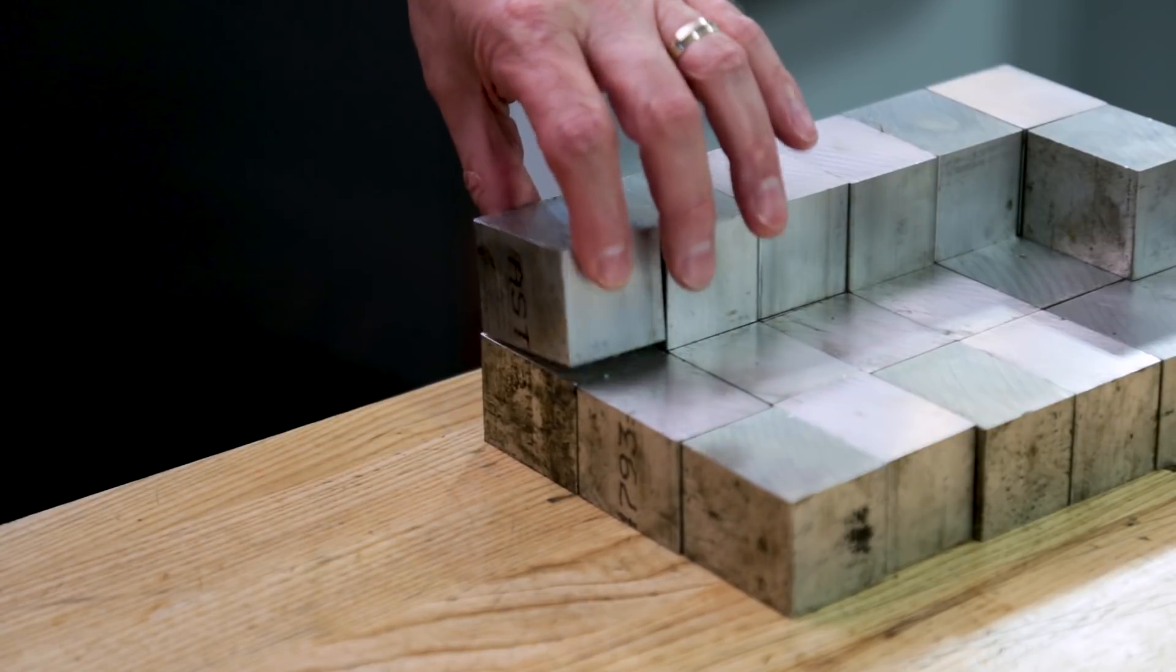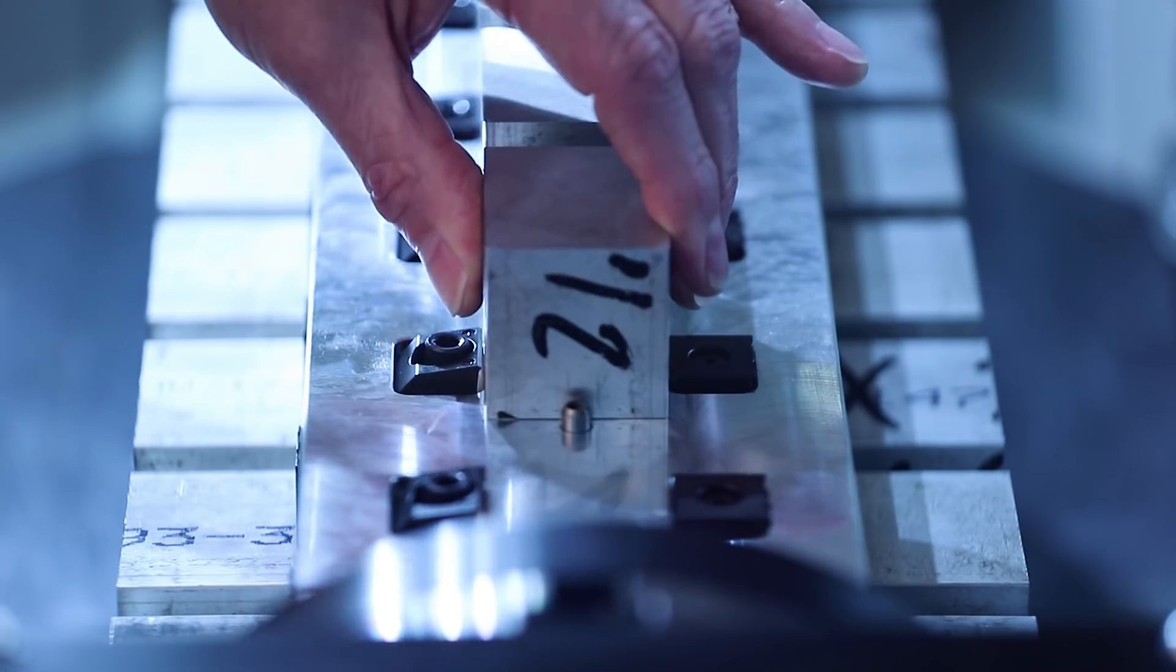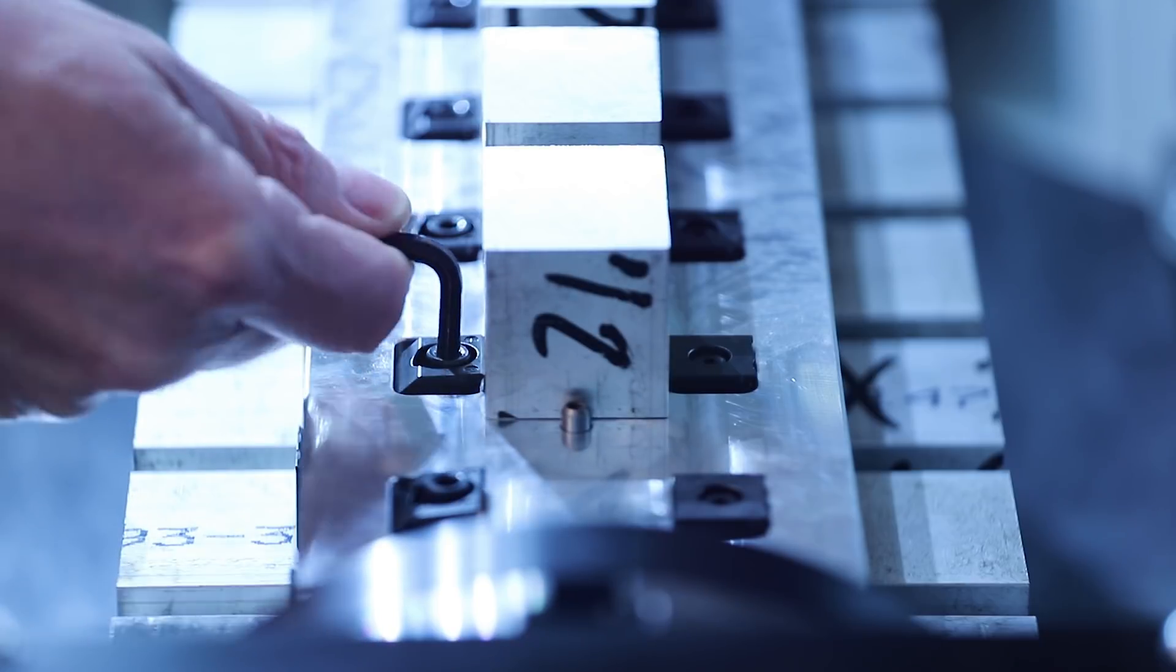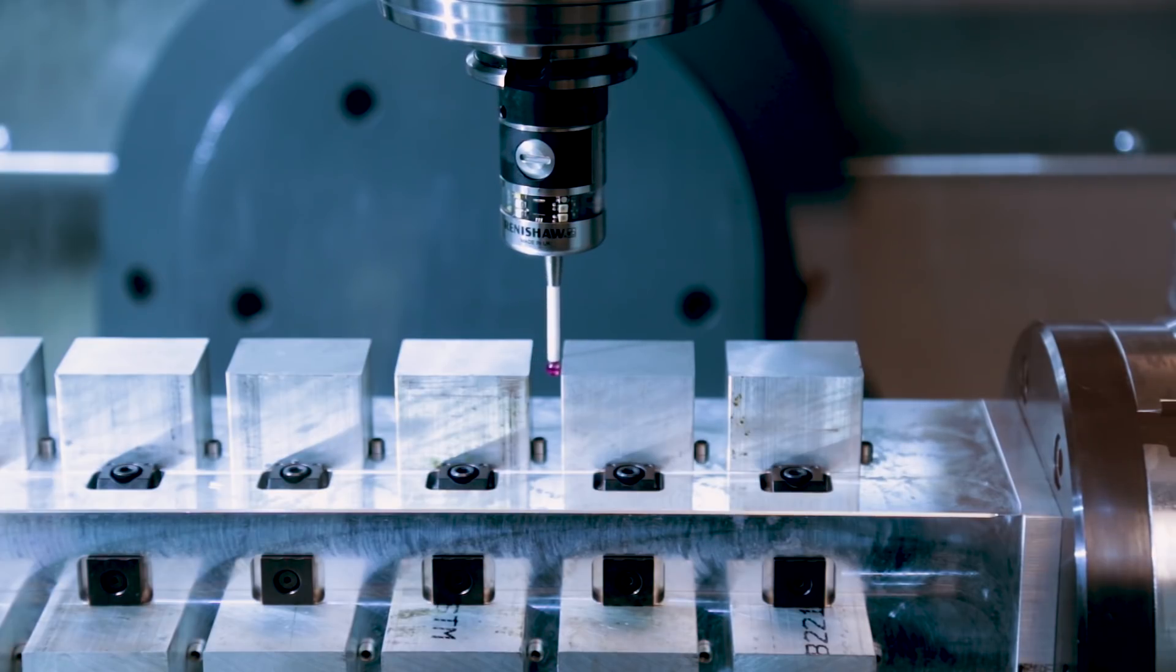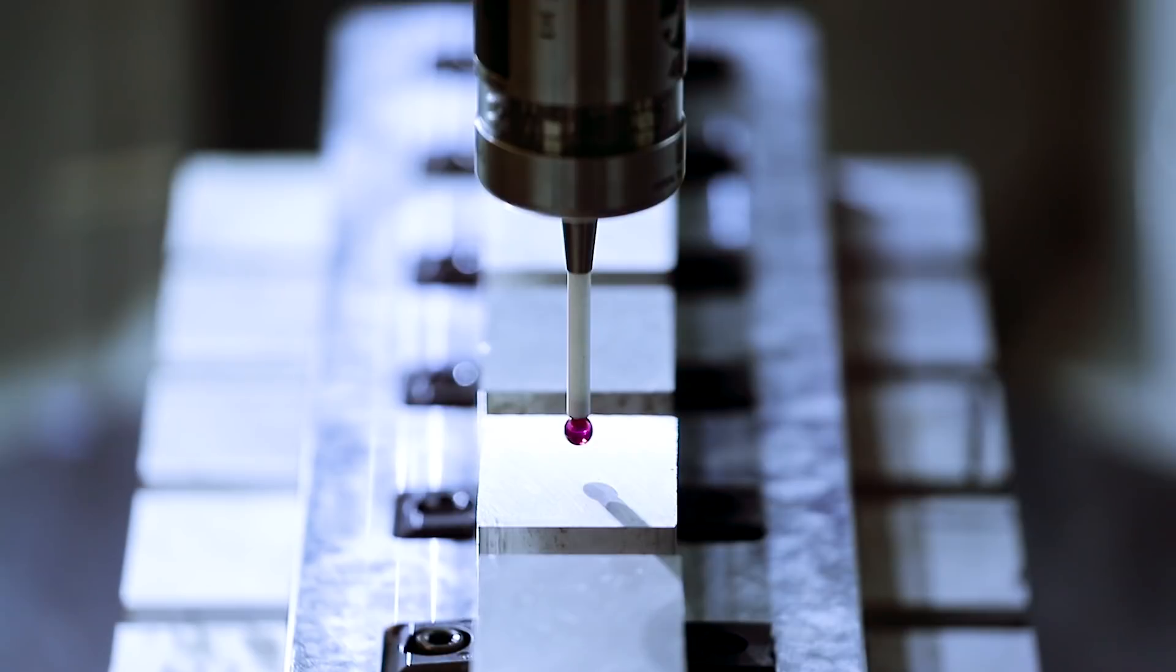Now that my program is set, it's time to load up my 28 blocks and use the probe to set the X, Y, and Z axis work offsets for each location.